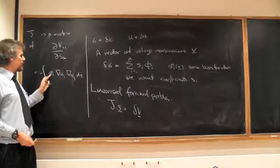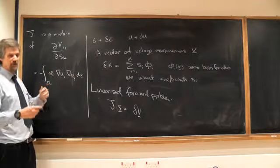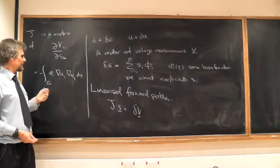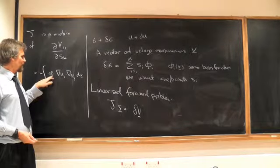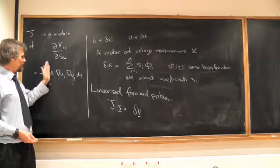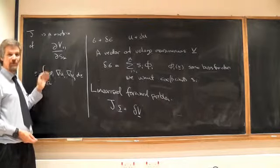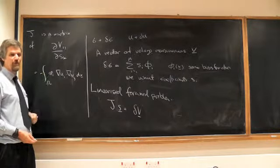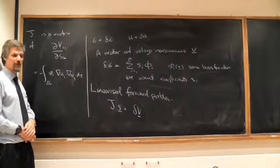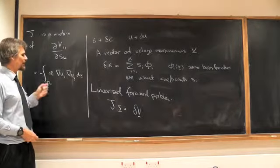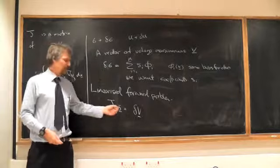If this phi_i was just one on some subdomain, like a tetrahedron, and zero elsewhere, we'd just have to work out the integral of this over that element. But if it's some smooth basis function, we'd have to do a bit more work. So this is something that's fairly easy to calculate, and then we have this linear problem to solve.